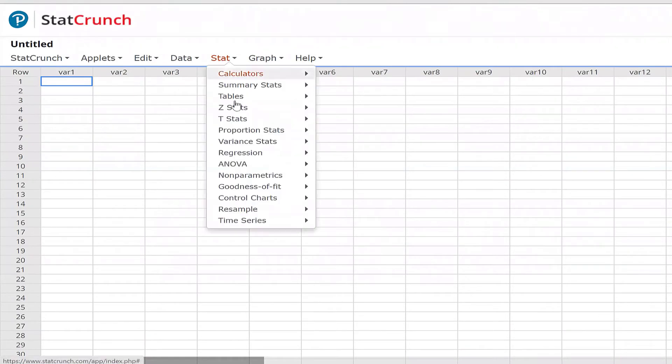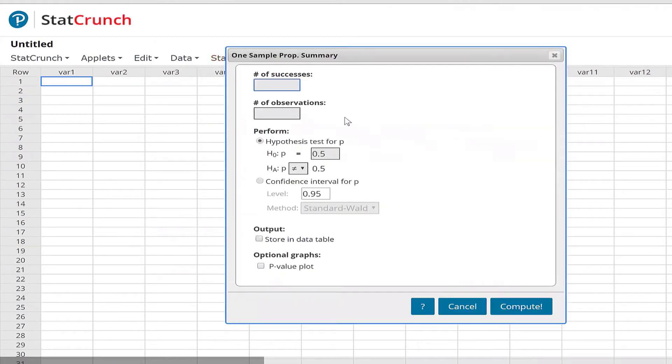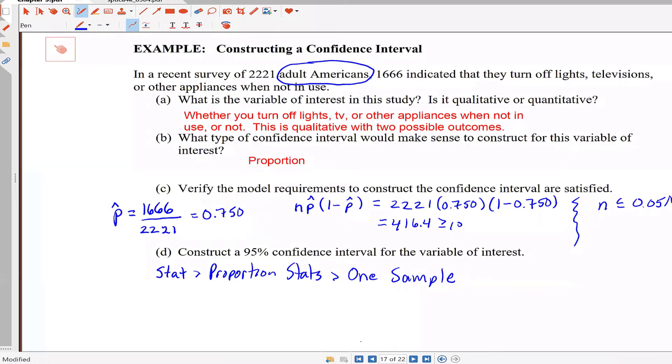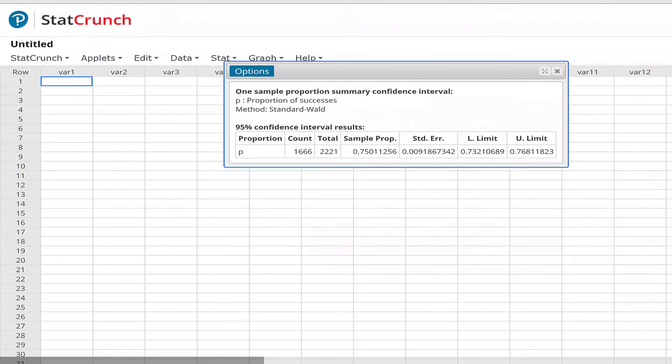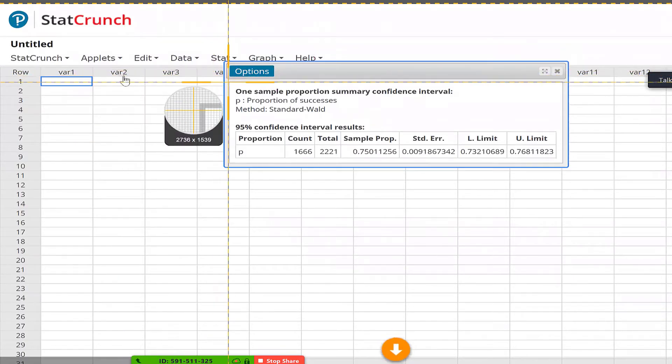So we go stat, proportion stats, one sample, and we have summarized data. It was 1,666 individuals that have the characteristic, 2,221 in our sample, and we wanted to construct a 95% confidence interval. Check the confidence interval radio button and leave the level at 0.95. Click Compute, and there's your results.